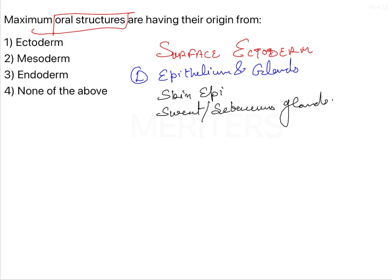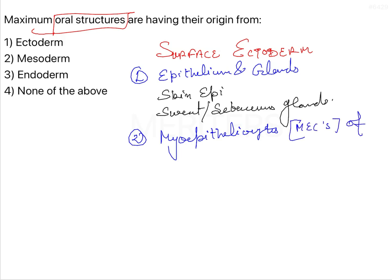The second thing is going to be your myoepitheliocytes, that is the ensheathing of skin glands. The third thing that gets derivation from the surface ectoderm is going to be any external opening.